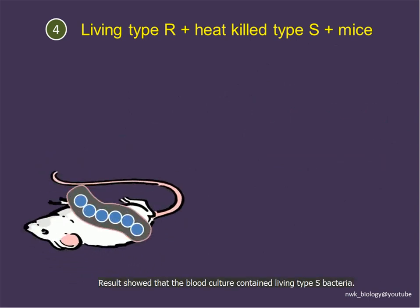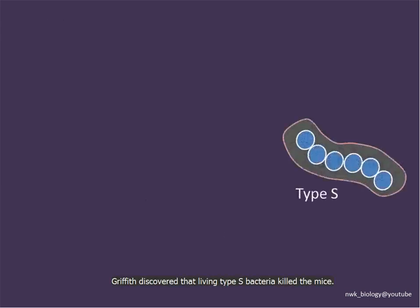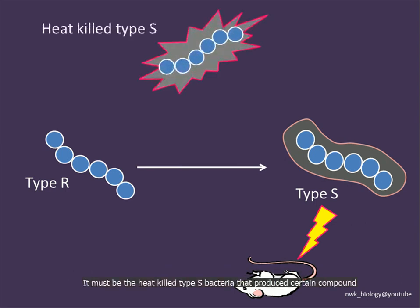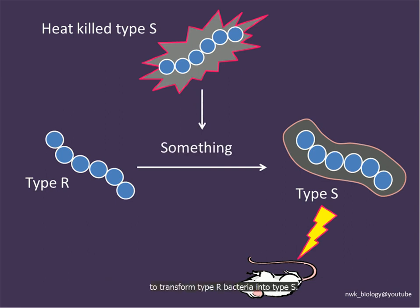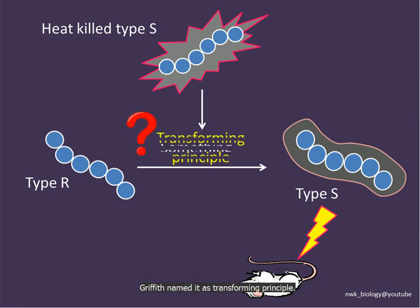The result showed that the blood culture contained living type S bacteria. Griffith discovered that the living type S bacteria killed the mice, but suspected that the type R bacteria had been transformed into type S by a certain compound from the heat-killed type S bacteria. Griffith did not know what the compound was, and named it the transforming principle.